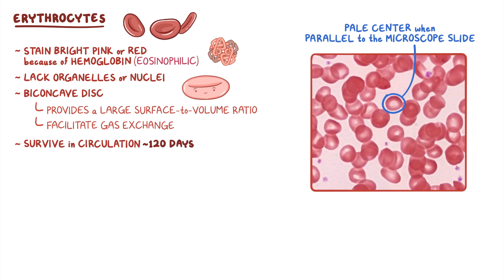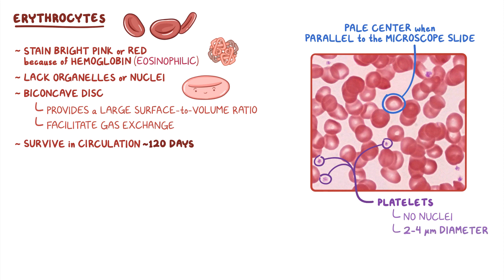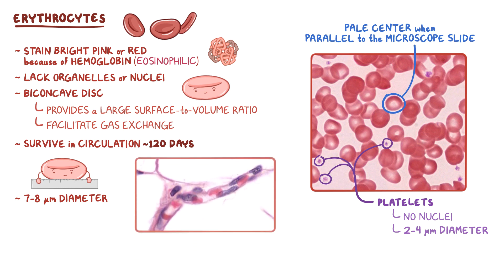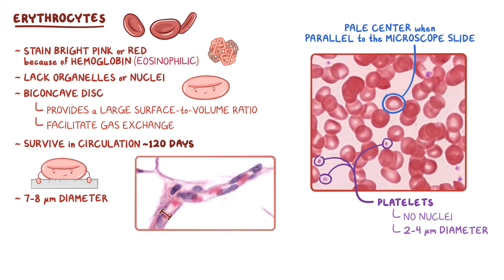The small basophilic or purple discs seen throughout this image are platelets. Platelets also don't have nuclei and are normally only about 2-4 micrometers in diameter. The average erythrocyte is about 7-8 micrometers in diameter, which is often used by histologists as an internal standard to estimate other nearby cells or structures, such as the diameter of a small capillary that's only slightly larger than a single erythrocyte.